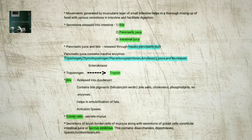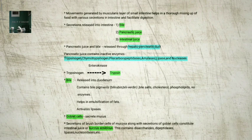The secretion of brush border cells of the mucosa and goblet cells constitute the intestinal juice or succus entericus. This juice contains a variety of enzymes like disaccharidases, dipeptidases, lipases, nucleosidases, etc. The mucus along with the bicarbonates from the pancreas protects the intestinal mucosa from acid and also provides an alkaline medium of pH 7.8 for enzymatic activities. Submucosal glands also help in this.